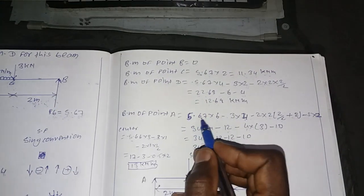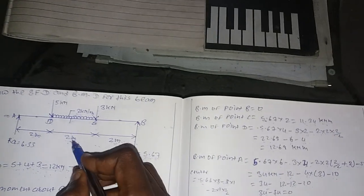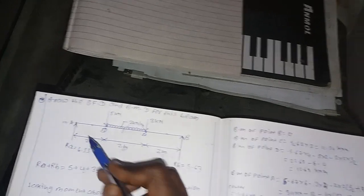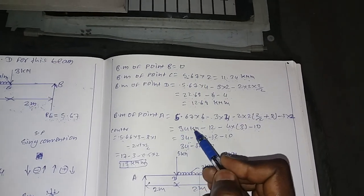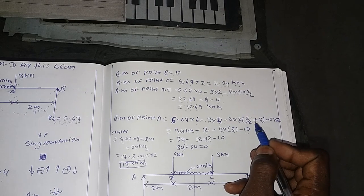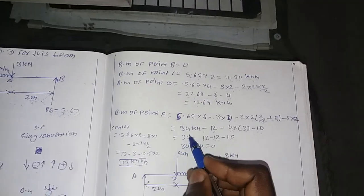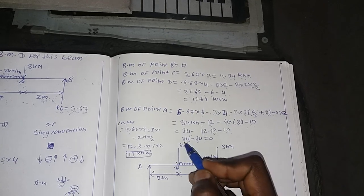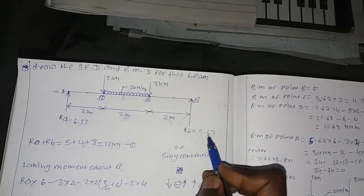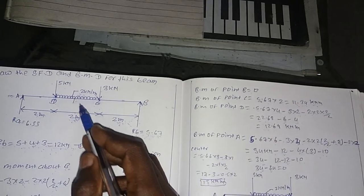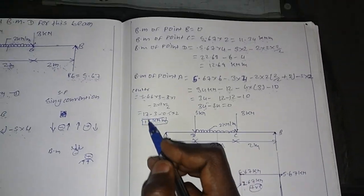Bending moment at point A: 5.67 into total distance minus 3 into total distance minus load into distance by half plus total distance, minus 5 into total distance. Working out: 5.67 into 6 equals 34, 3 into 4 equals 12, 2 into 2 equals 4, divided by 2 gives 1 plus 2 equals 3, 5 into 2 equals 10, sum of all loads equals 34, giving 34 minus 34 equals 0. The UDL is over 2 meters, half distance is 1 meter. Center point bending moment: 5.67 into 3 minus 3 into 1 minus load into distance by half equals approximately 30 kN·m at center.